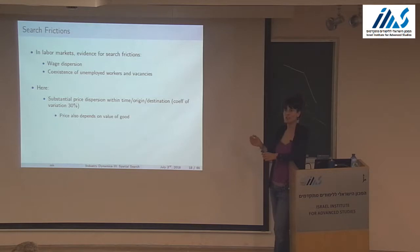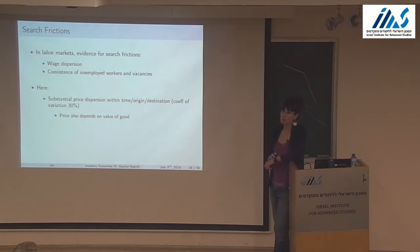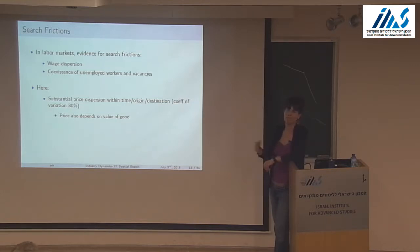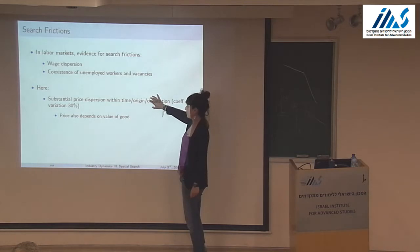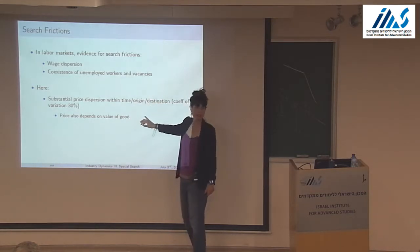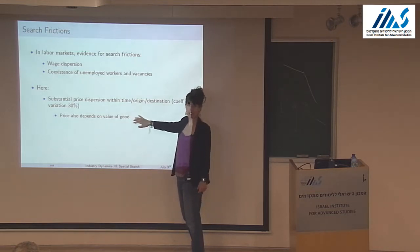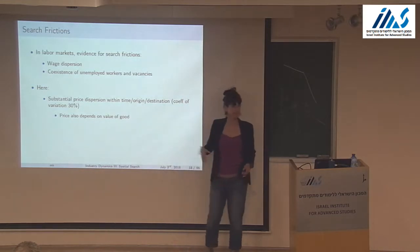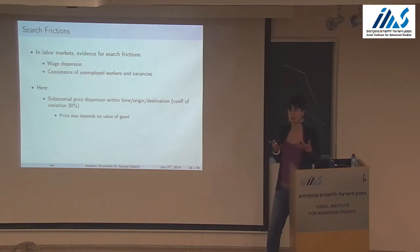We've looked at pairs with a lot of contracts — like Australia-China — and still see the same patterns. In addition to price dispersion, the price depends on the value of the good, which I'll explain later. This is actually consistent with a model of frictions — the law of one price basically doesn't hold, and it's consistent with a bargaining model.